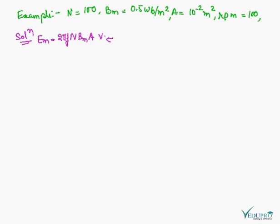The frequency is hundred upon sixty because hundred is RPM. I want to convert this into RPS, so I have to divide it by 60. So f is equal to 50 upon 3 hertz. When the plane of the coil is at right angle to the field, in this case theta is equal to 0 degrees.